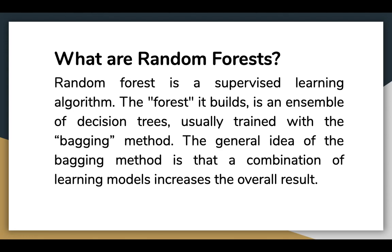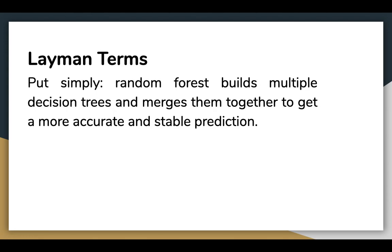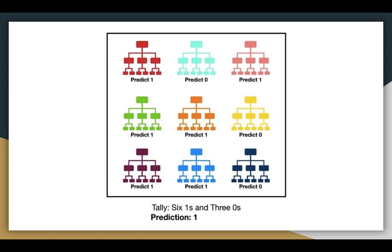Let's see what this means in simple layman terms. Random Forest builds multiple decision trees and merges them together to get a more accurate and stable prediction. Each individual tree spits out a class prediction, and the class with the most votes becomes our model's prediction.